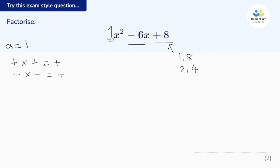But these numbers also need to add together to give this negative 6. So that tells me the numbers are probably going to be both negative. Let's choose our pair. Let's go with this one, 2 and 4. And we've got a negative 2 and a negative 4. Let's see if that works. If I add those together, negative 2 and negative 4 is the same as negative 2 subtract 4, which is negative 6. So that works.